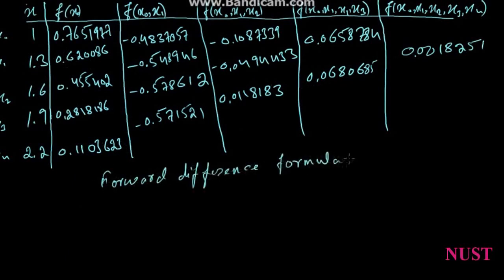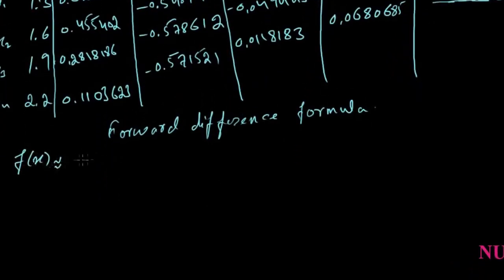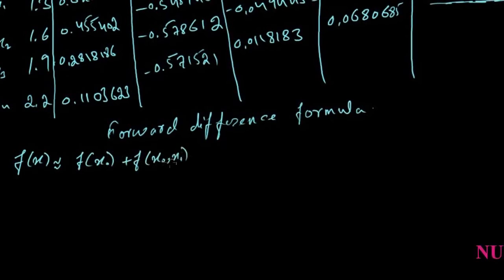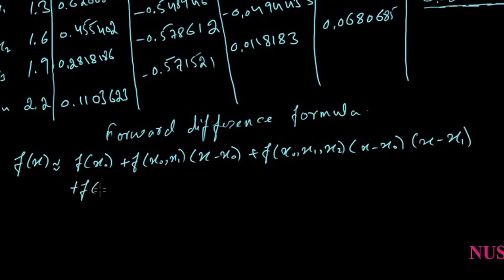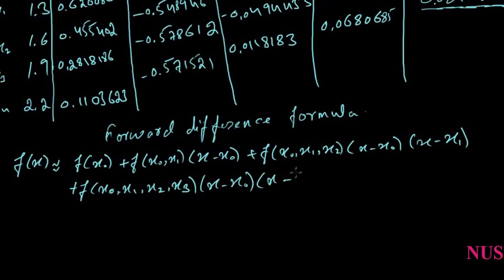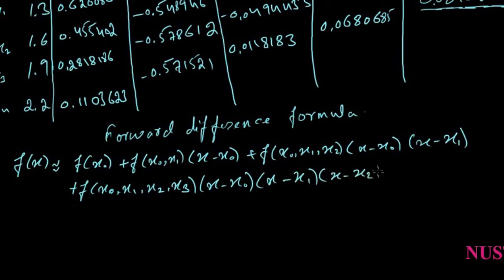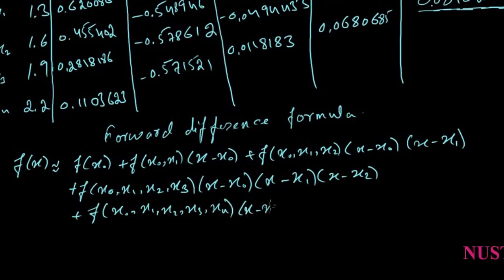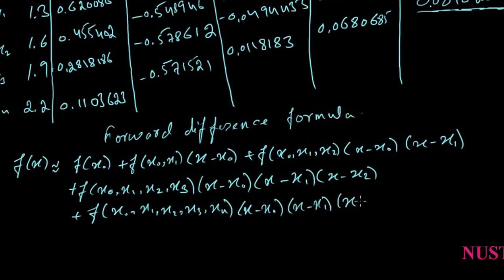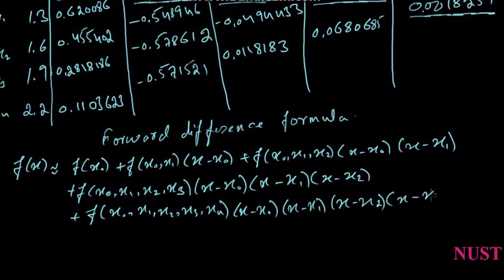Once we finish with the table, we're going to use the Newton divided difference formula: f(X) ≈ f(X0) + f(X0, X1)·(X−X0) + f(X0, X1, X2)·(X−X0)·(X−X1) + f(X0, X1, X2, X3)·(X−X0)·(X−X1)·(X−X2) + f(X0, X1, X2, X3, X4)·(X−X0)·(X−X1)·(X−X2)·(X−X3).